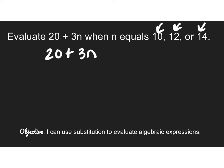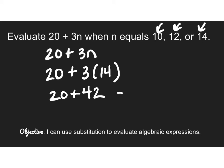And last but not least, the value of n becomes 14. So we've got 20 plus 3 times 14. I'm going to do my multiplication first. So 3 times 14 is 42. I know 3 times 10 is 30. 3 times 4 is 12. So then I add them together. 20 plus 42 is equal to 62. I used substitution to find the value when n was 10, 12, or 14.